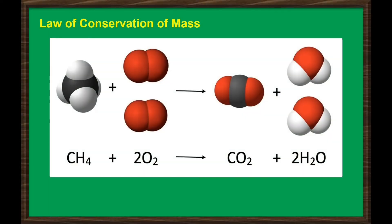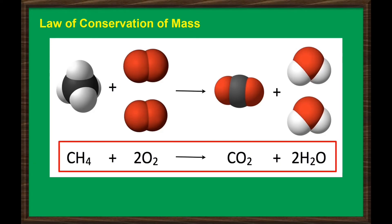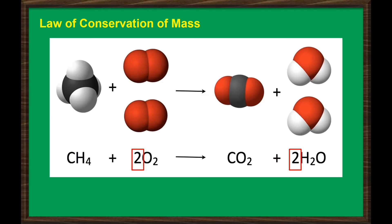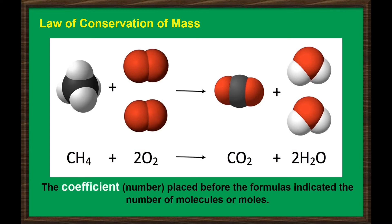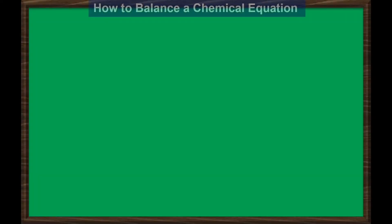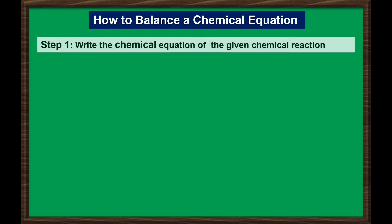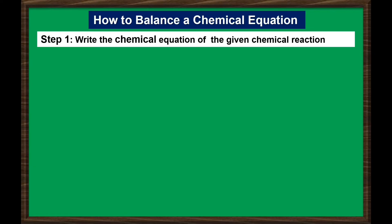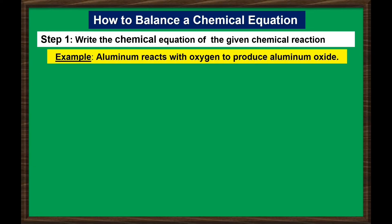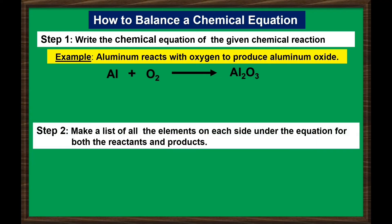Remember that a chemical reaction can be presented in a chemical equation. The number at the left side of a reactant or product is called a coefficient. The coefficient is a number placed before the formulas indicating the number of molecules or moles. It is very important to determine the correct coefficient number to balance the chemical equation, thus following the law of conservation of mass. The first step is to write the chemical equation of the given chemical reaction. For example, aluminum reacts with oxygen to produce aluminum oxide. The second step is to make a list of all the elements on each side of the equation for both the reactants and products.